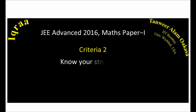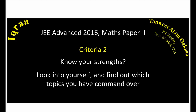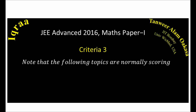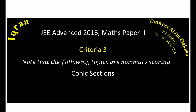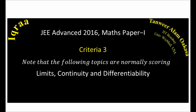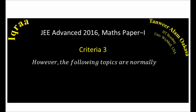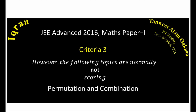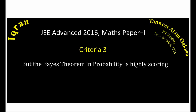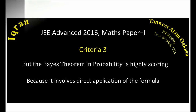The second criteria is that you know your strengths. Look into yourself and find out which topics you have command over. Normally, the following topics are highly scoring: vectors, complex numbers, circles, conic sections, 3D, matrices and determinants, limits, continuity and differentiability. However, topics like permutation and combination and probability are normally not scoring because these questions involve a number of cases to be evaluated, and you might miss some cases or make calculation mistakes. But the Bayes theorem in probability is highly scoring because it involves direct application of the formula.